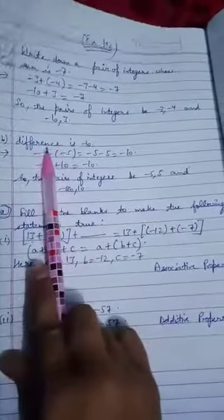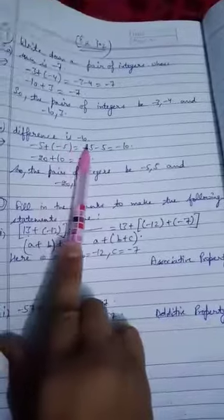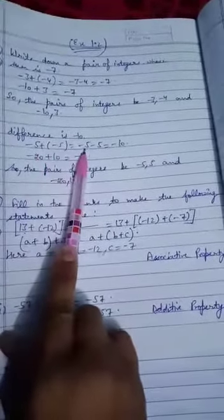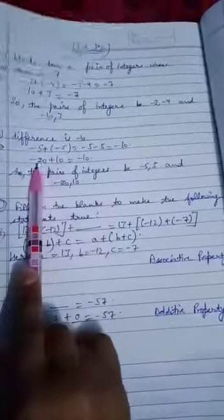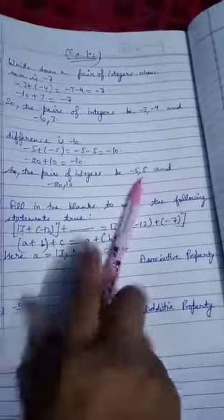Now in the second part there is a difference of minus 10, so we have to take two integers whose difference is minus 10. Now minus 5 minus 5 becomes minus 10. Minus 20 plus 10 becomes minus 10. So the pair is minus 5 and minus 5.